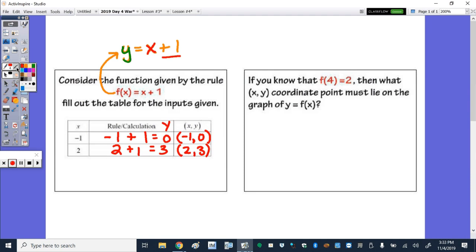Alright, table's done. Let's move to the right. It says if you know that f(4) equals 2, then what xy coordinate point must lie on the graph of y equals f(x)? So just taking this notation and rewriting it as a point, remember whatever's in parentheses is our x. And this f(4) we can cross out is the y value.